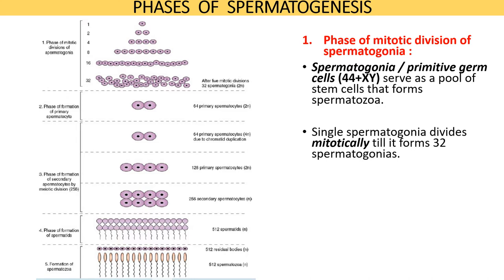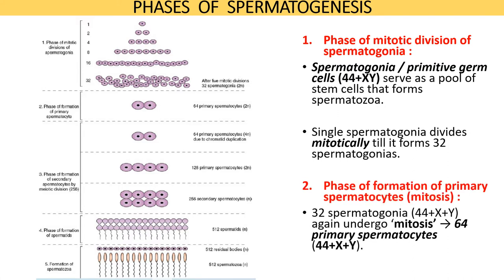Spermatogenesis has different phases. The first phase is the phase of mitotic division of the spermatogonia. During this phase, a single spermatogonium divides by mitosis until it forms 32 spermatogonia. This division occurs in the basal compartment of the seminiferous tubules.